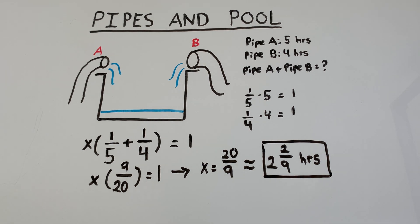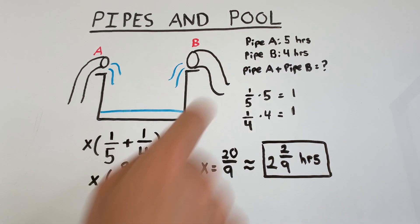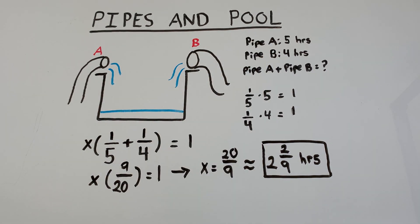Now we can do a final check to make sure this answer makes sense. If pipe A takes 5 hours to fill the pool on its own, pipe B takes 4 hours, well if both pipes are working together, it should take less time. So we can be pretty confident that our answer of 2 and 2 ninths hours is correct.